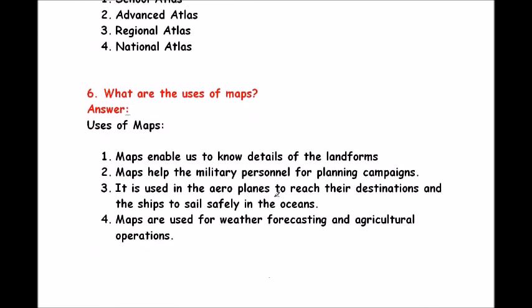Question 6: what are the uses of maps? Maps enable us to know details of the landforms. Maps help military personnel for planning campaigns. Maps are used in aeroplanes to reach destinations and ships to sail safely in the oceans. Maps are also used for weather forecasting and agricultural operations.